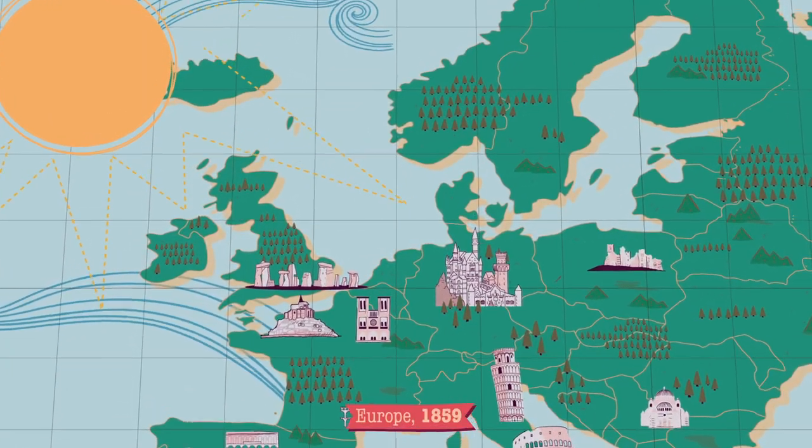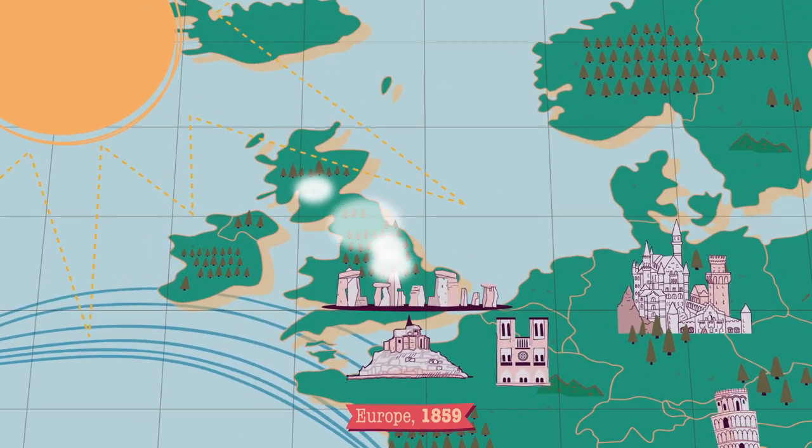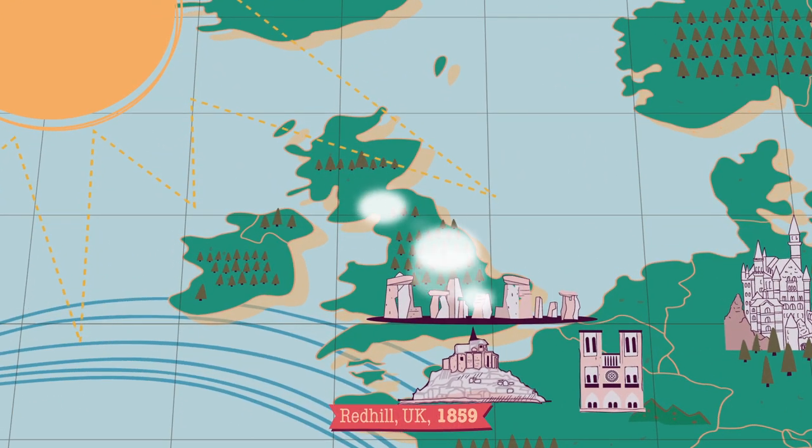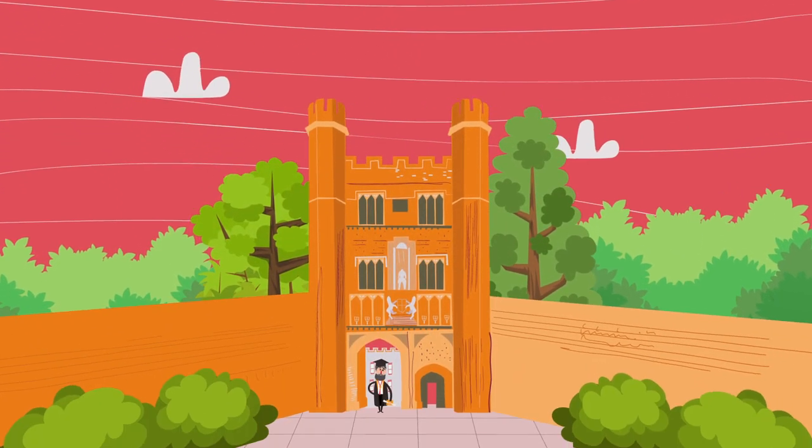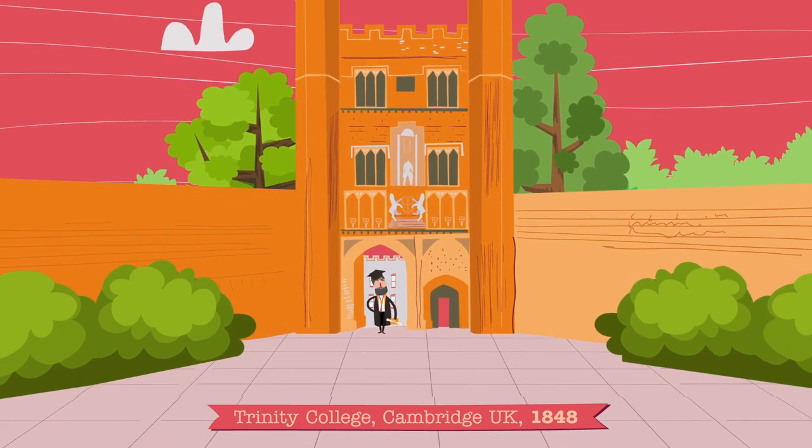Indeed, the first flare was observed by Richard Carrington in 1859 at Redhill Observatory, south of London. Before talking about his discovery, let's get to know Carrington.